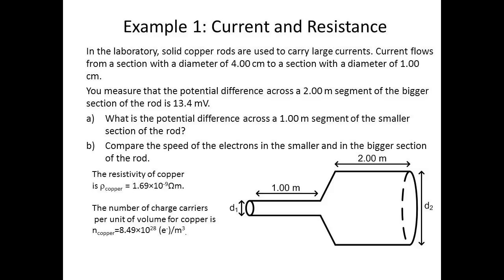And compare the speed of the electrons in the smaller and in the bigger section of the rod. The resistivity of copper is 1.69 × 10^-9 Ω·m. The number of charge carriers per unit of volume for copper is 8.49 × 10^28 electrons per meter cubed.